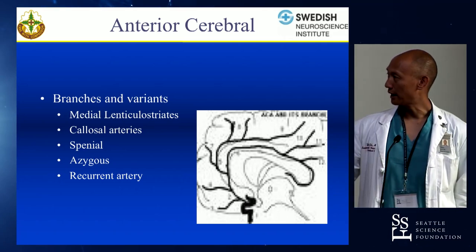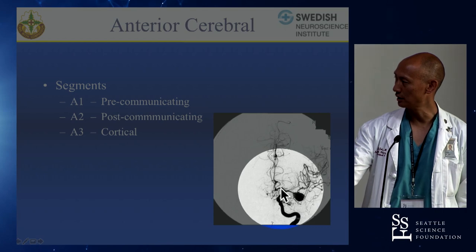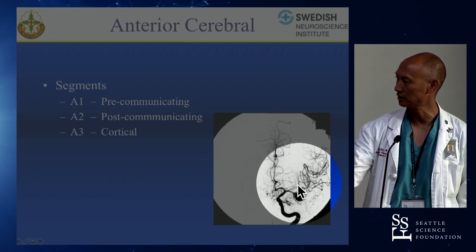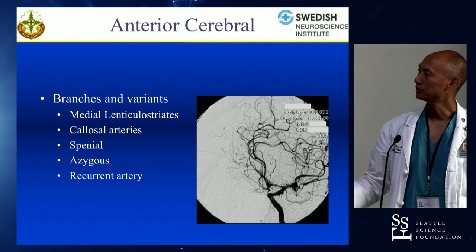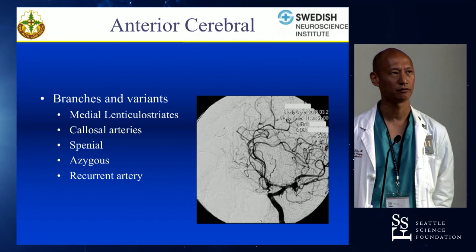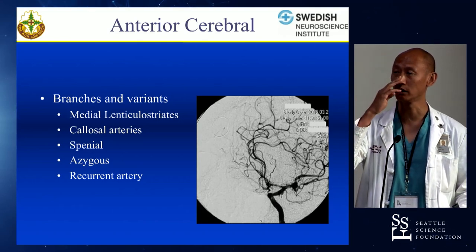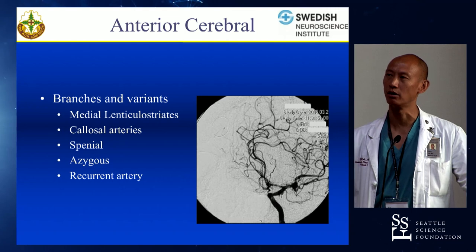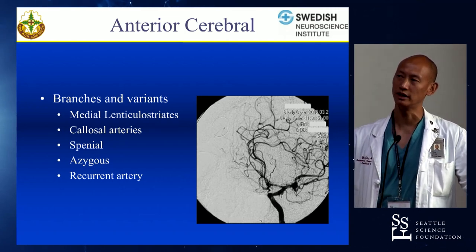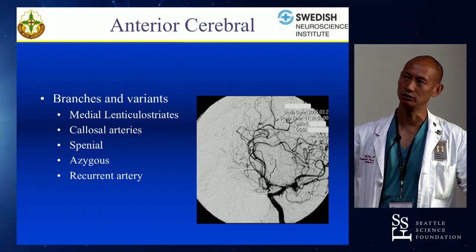The medial lenticulostriate arteries: the A1 and M1 can be thought of as a continuous segment all supplying the lenticulostriate arteries — medial and lateral lenticulostriates, best seen on the AP view. The splenium is actually considered a watershed zone, useful for conditions like Moya Moya — an area where collaterals can occur. The distal most aspect of the pericallosal artery becomes the anterior splenial artery, while the PCA gives rise to the posterior splenial arteries. That collateral zone is where blood is shared, and where ACA occlusion may get reconstituted across the splenial zone.